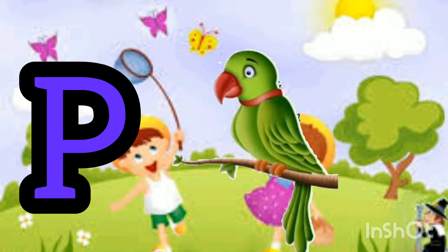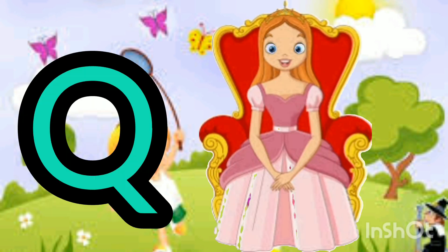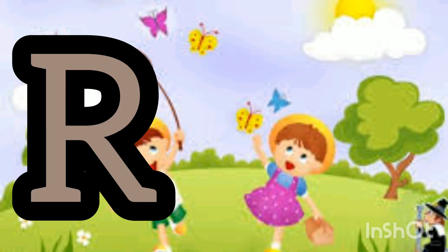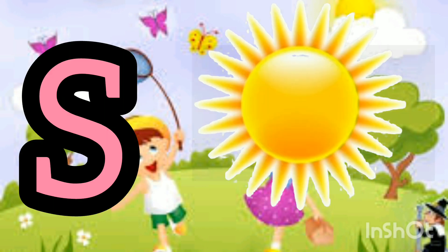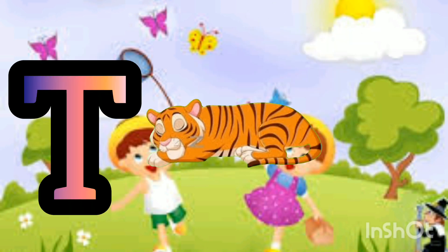B. B for better. Q. U for green. R. O for rabbit. S. S for sun. T. Timbo tiger.